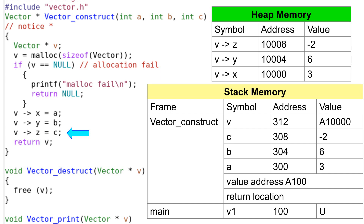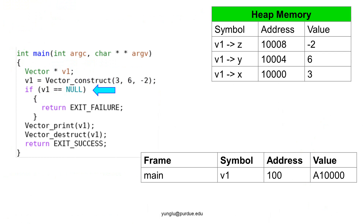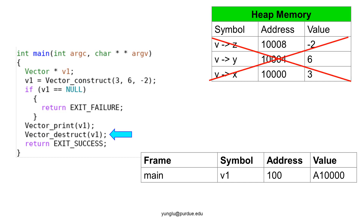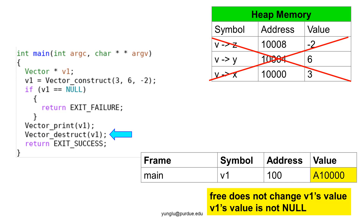Returning v means returning the value of v, which is address 10,000. The value address of this function call is address 100. Thus, 10,000 is written to the value at address 100. After the constructor finishes and the program resumes in the main function, the value of v1 is 10,000. Before the program ends, the destructor is called to free the memory. The destructor frees the 12 bytes allocated earlier by malloc. It is important to understand that the value of v1 is not changed by the destructor — v1 is still 10,000. It is the programmer's responsibility not to use v1 anymore in the rest of the program.